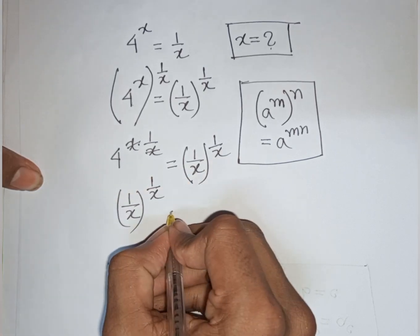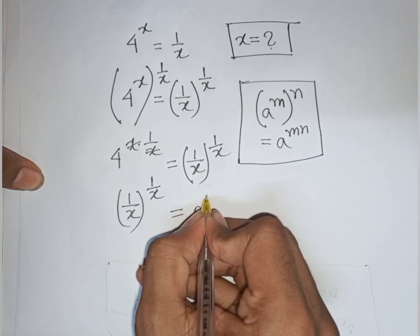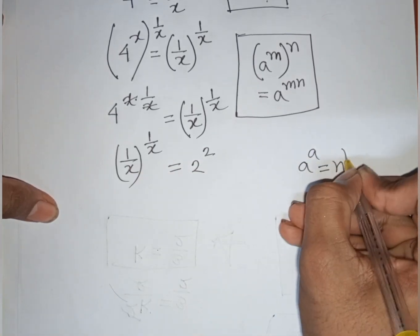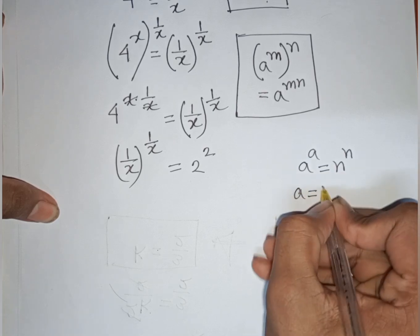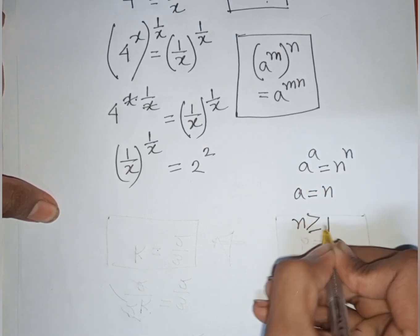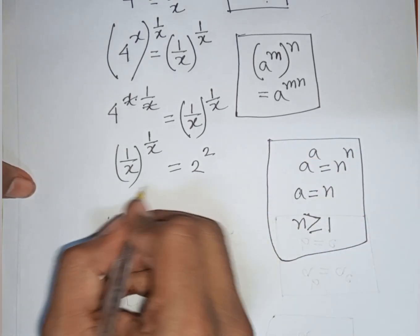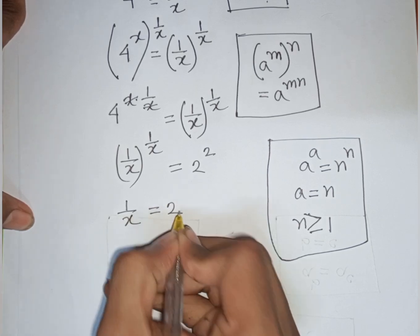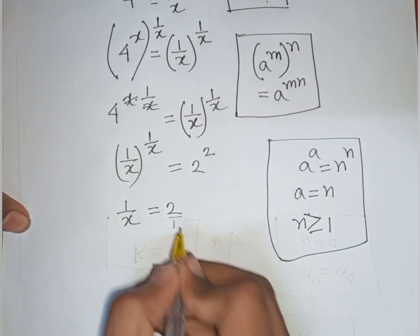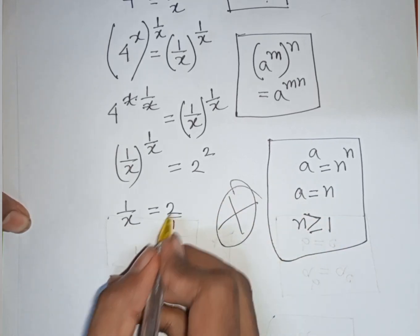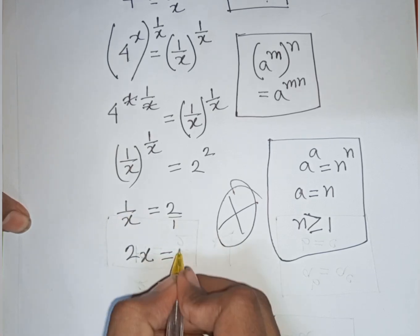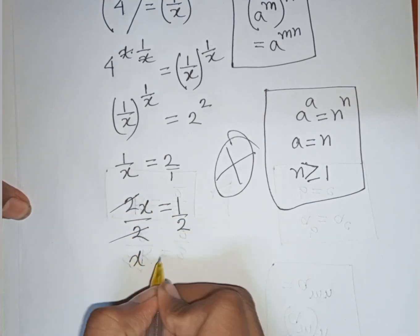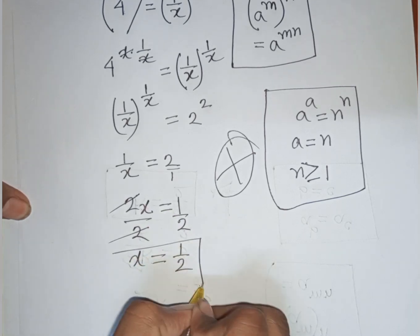So we get (1/x)^(1/x) equals 4, and 4 can be written as 2². Here we apply the rule that a^a equals n^n, so a equals n where n is greater than or equal to 1. Comparing, 1/x equals 2, which is 2/1. Cross-multiplying gives 2x equals 1, so x equals 1/2. This is our final answer.